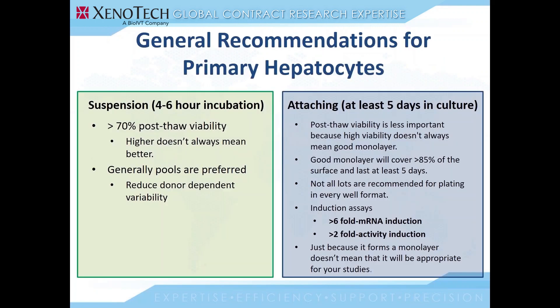Now that you have an idea of which test system you need, there are a few general recommendations for looking at lots to suit your work. For suspension hepatocytes, you're mainly looking for lots that have viability above 70%. But higher post-thaw viability doesn't necessarily mean higher quality cells, as the rate of death and loss of activity is highly donor dependent. Just because you start with a high post-thaw viability in the 90s doesn't guarantee you'll still have reasonable viability after four to six hours in culture. Generally, pools are the most useful for suspension, but there are instances where individual donors are also useful.